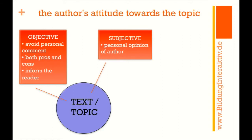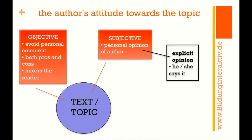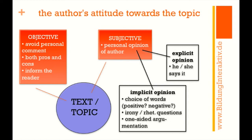If however your author is subjective, then he or she will give you his or her personal opinion, and you have to do some more work. You have to find out — and again find evidence in the text — whether your author voices the opinion explicitly, meaning he or she just says it outright, which is the easy part, or implicitly, which is a lot more work.